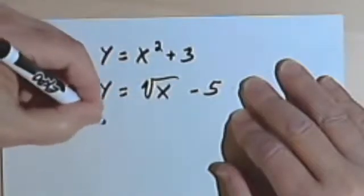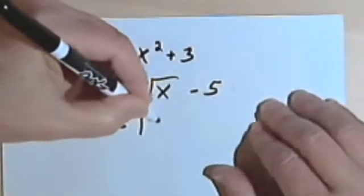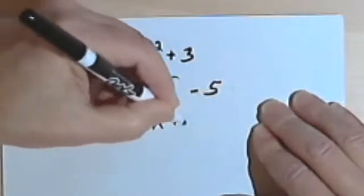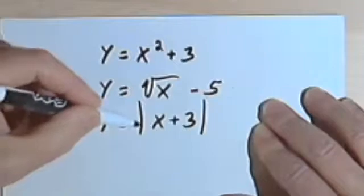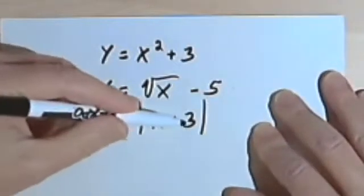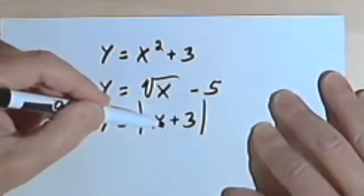I also can't have a variable within the absolute value brackets, something like y equals the absolute value of x plus 3. This would not be a linear function.